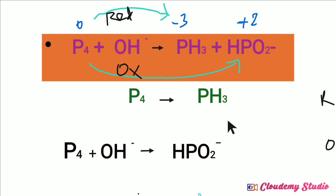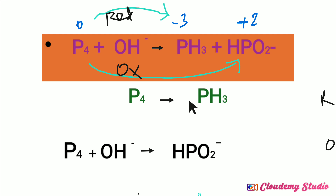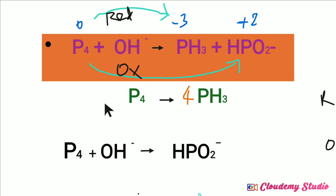Both half-reactions need to be balanced separately. For the reduction half-reaction, we first balance atoms other than hydrogen and oxygen. On the left-hand side there are 4 phosphorus atoms, but on the right-hand side only 1 phosphorus atom in phosphine, so we multiply phosphine by 4. When phosphine is multiplied by 4, hydrogen becomes 12 on the right-hand side, but there is no hydrogen on the left, so we add 12 hydrogen ions on the left-hand side.